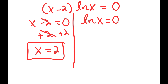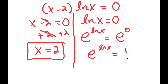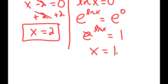Now for ln x equals 0 — ln is basically asking: ln of what is equal to 0? How we solve this is we can take e to the power of both sides. So I get e to the power of ln x is equal to e to the power of 0. e to the power of 0 is equal to 1, and e and ln cancel out, so I get x is equal to 1.